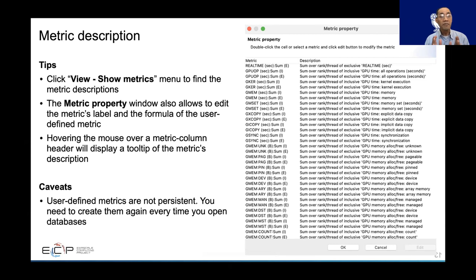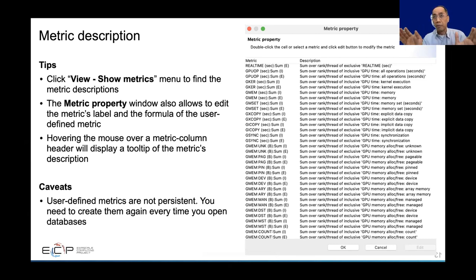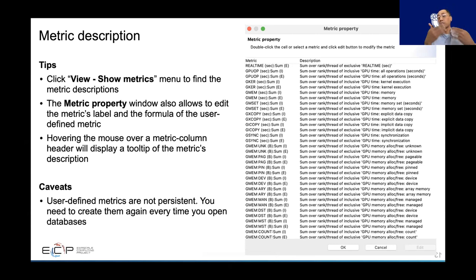Another very useful feature in SPC Viewer is the metric property. Sometimes the metric label is not very descriptive — like 'GPO OP'. You can click View, Show Metrics, and find that GPO OP is the sum of the rank or threads of inclusive GPU time for all operations in seconds. You can also edit the label or the formula directly in this window.